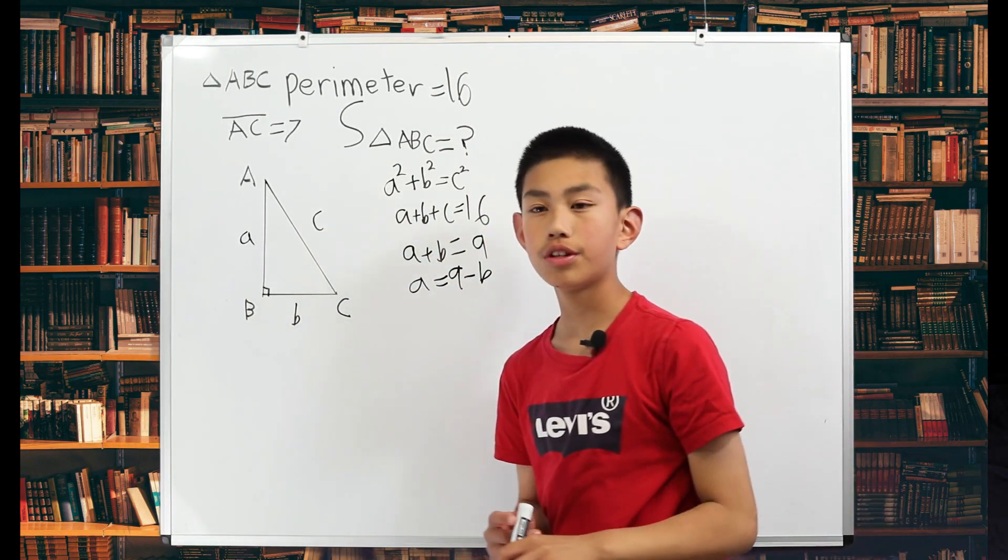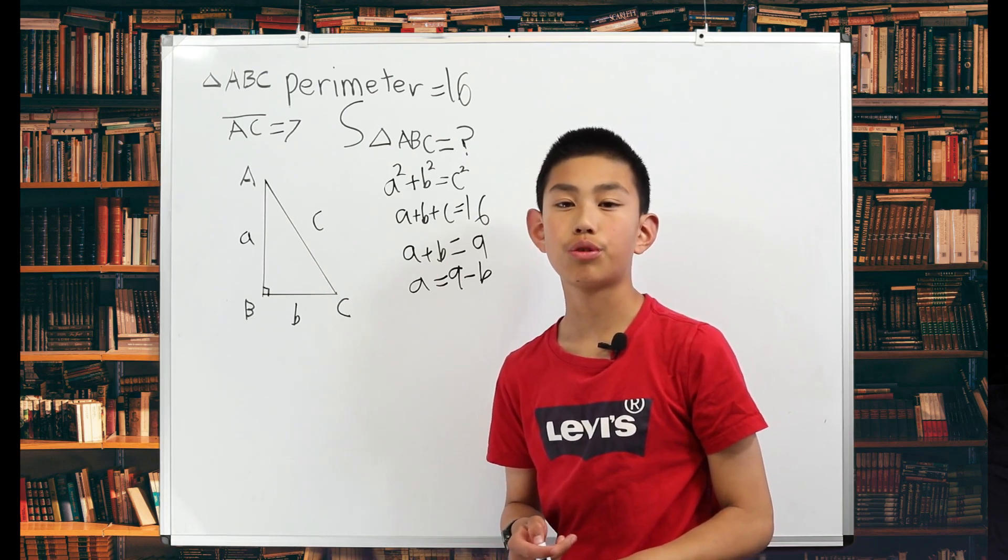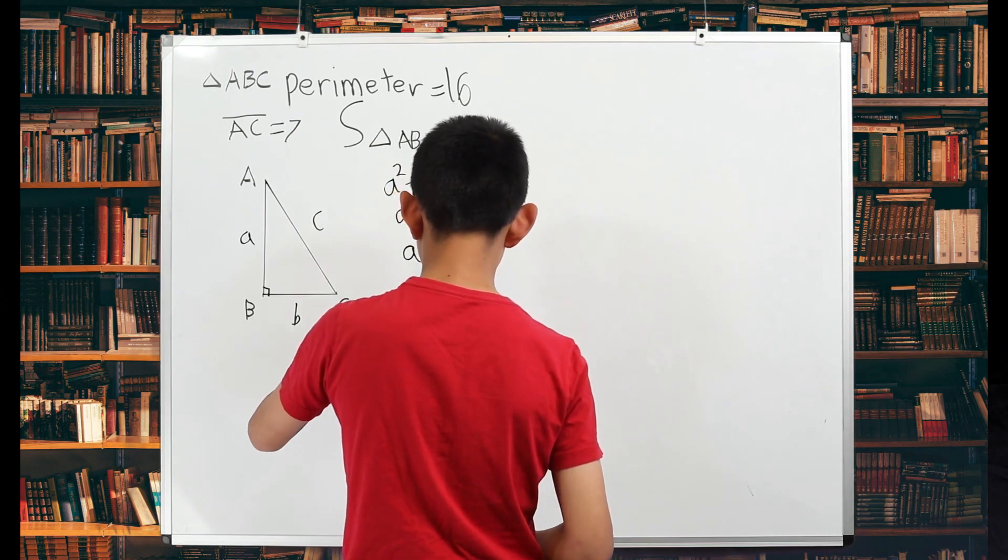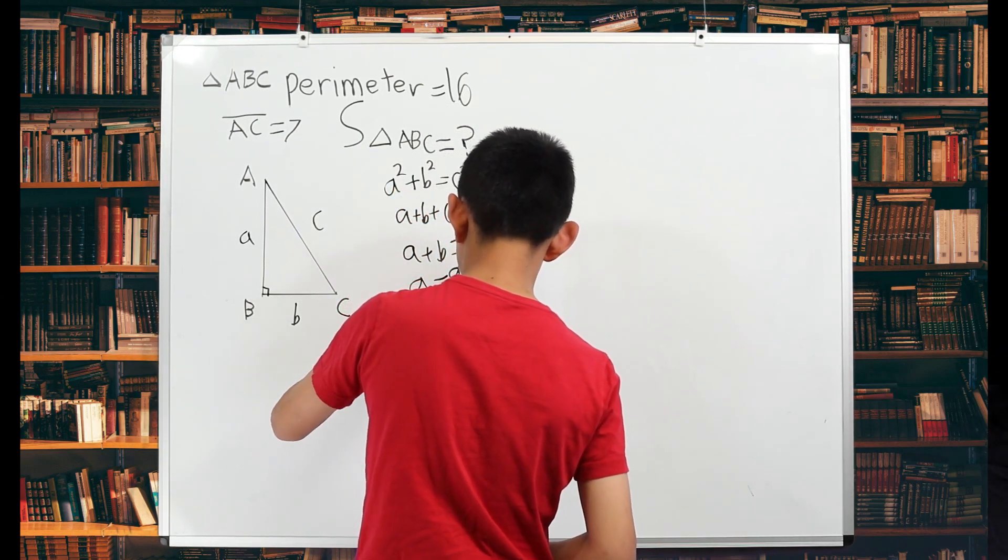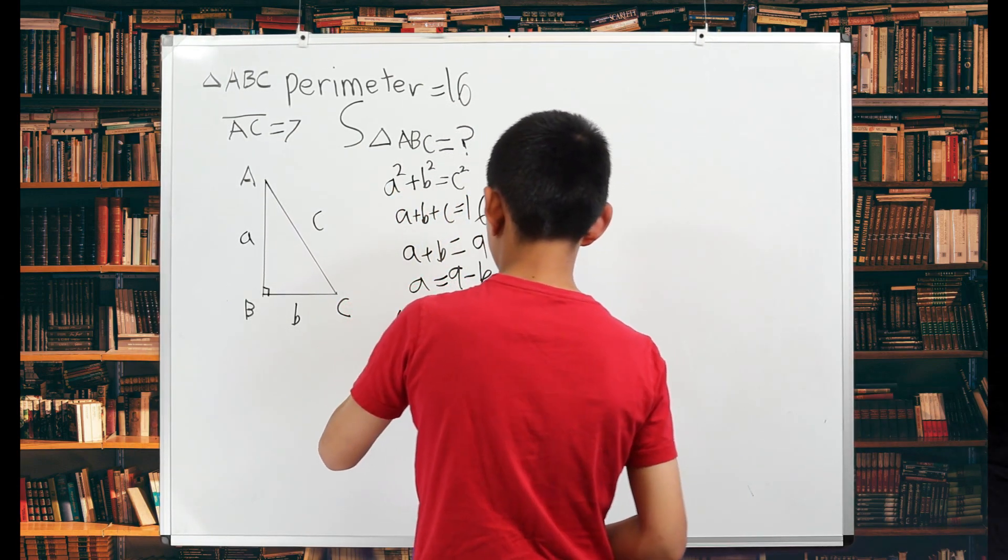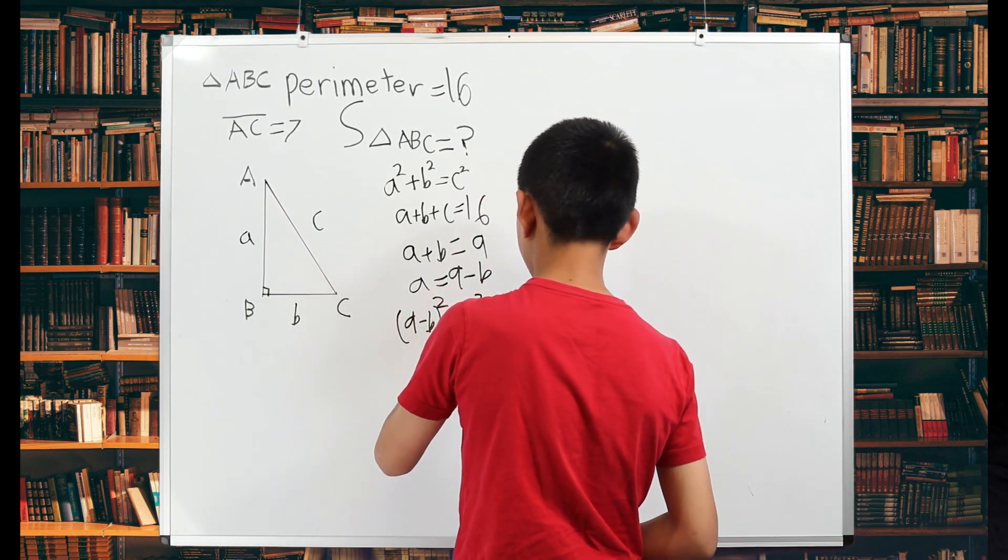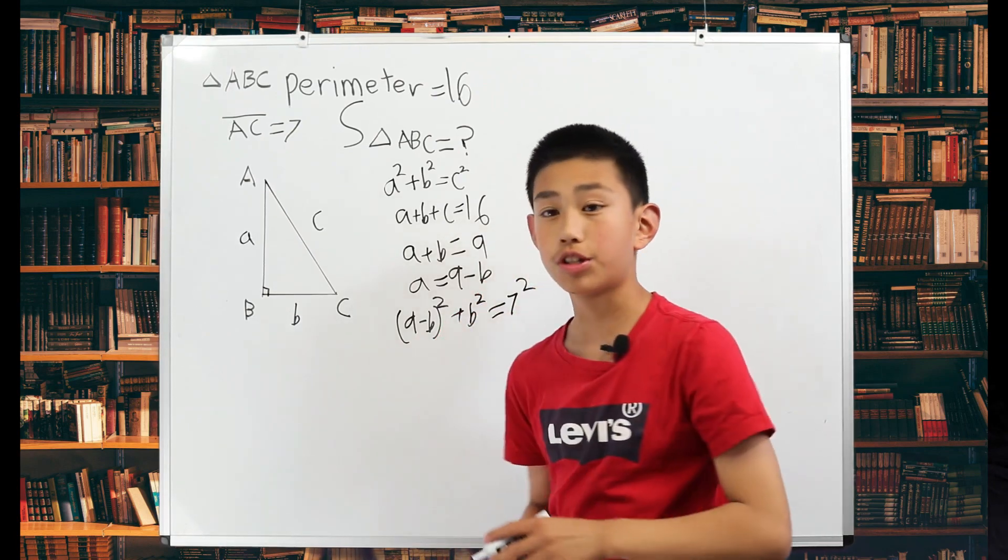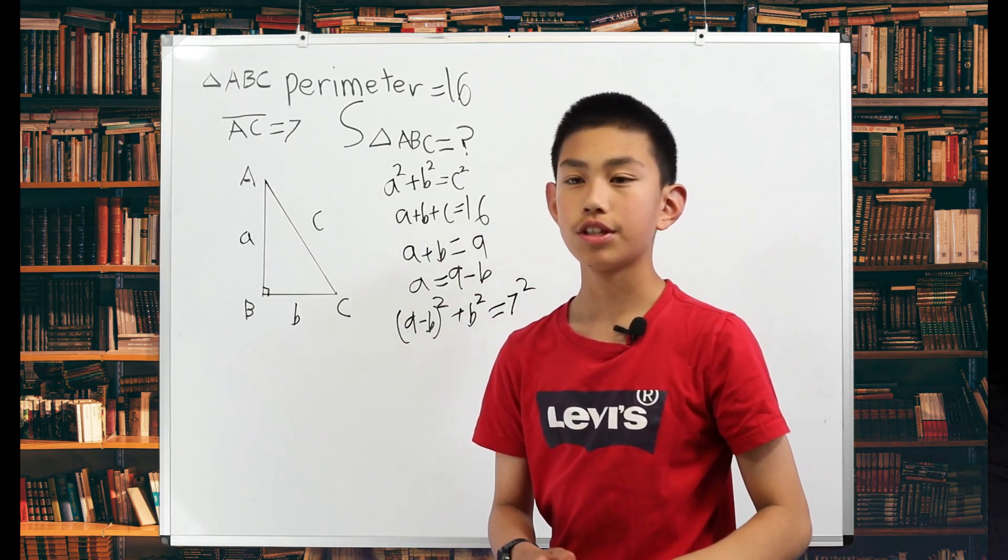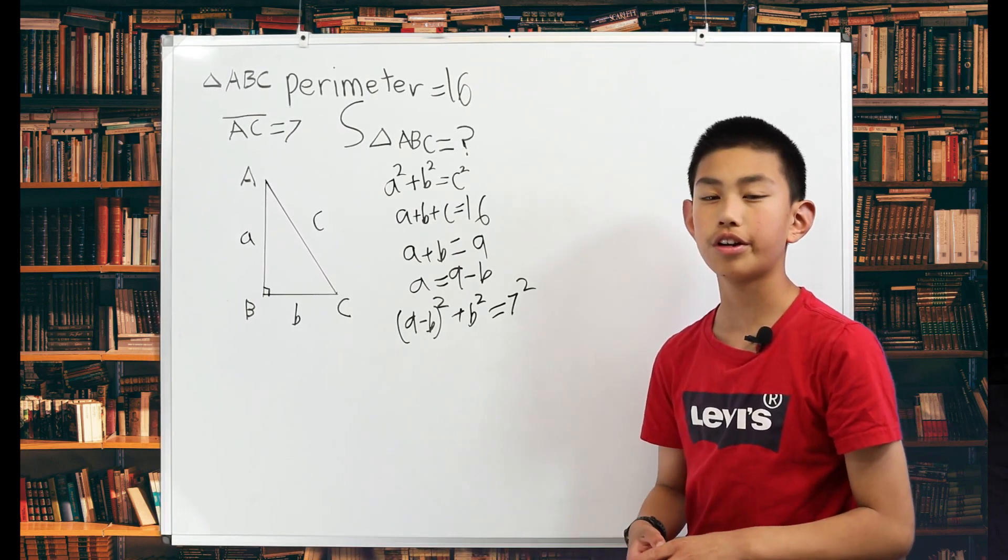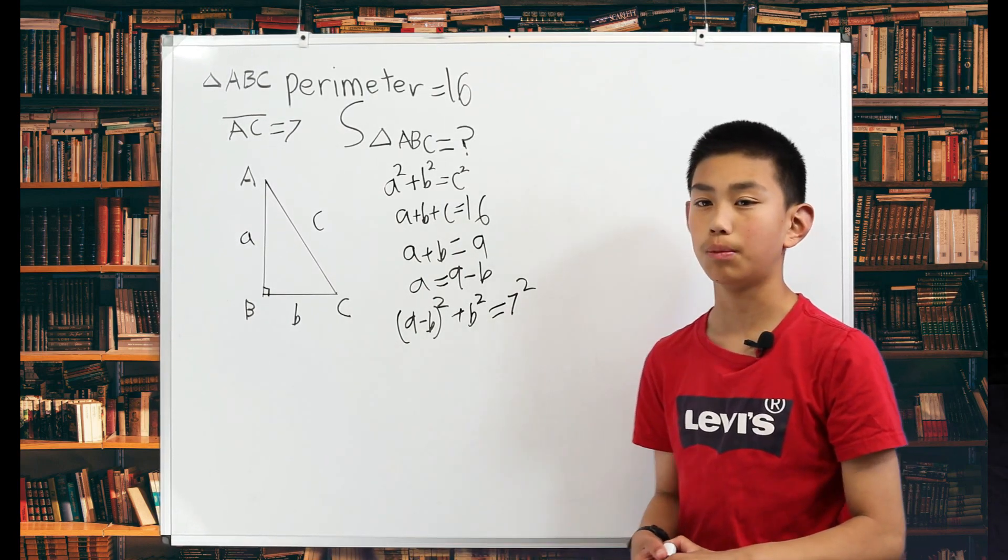Now we can use this new equation to try and solve for it. So this equation is going to be 9 minus B squared plus B squared, which is equal to 7 squared, which is 49. But this is going to be incredibly hard to solve. So we're going to use a different way to solve this problem.